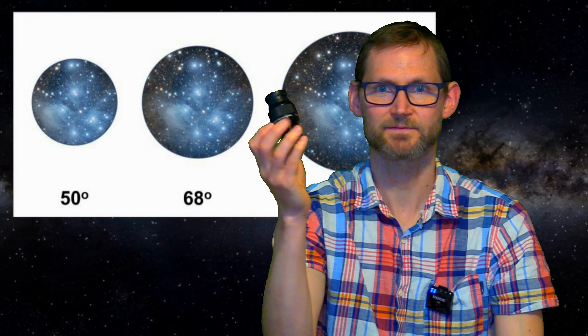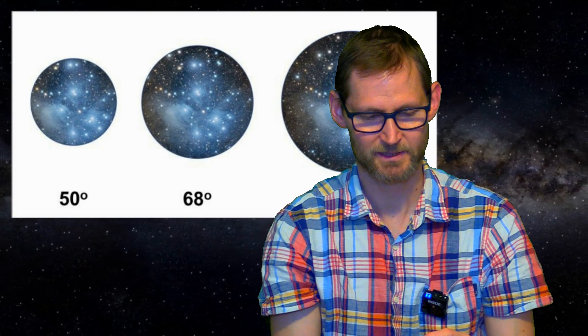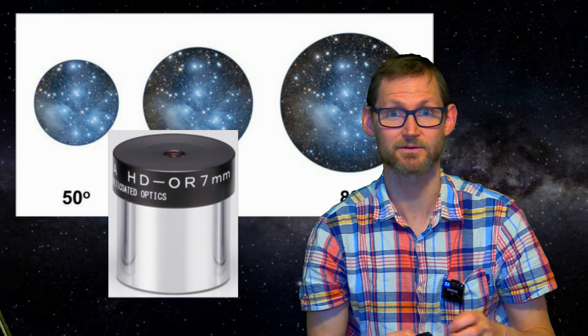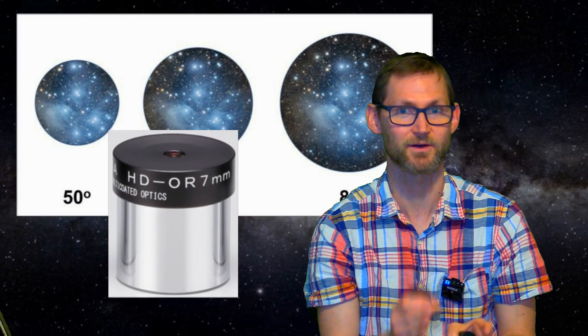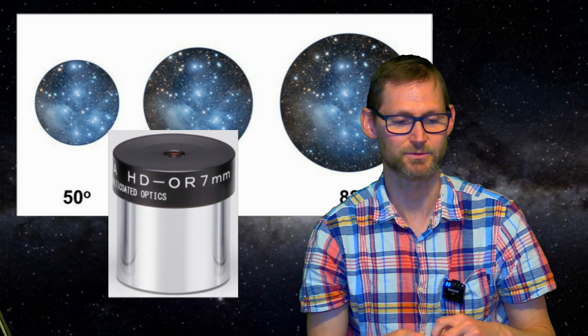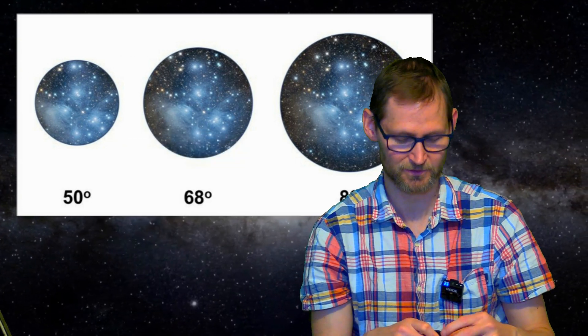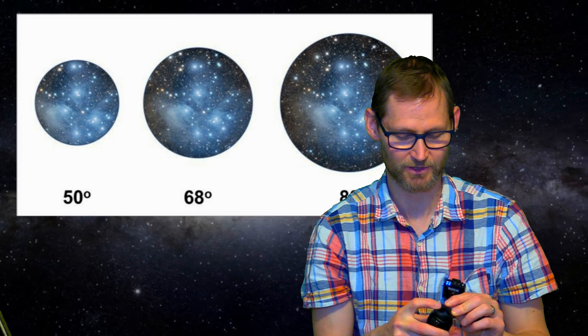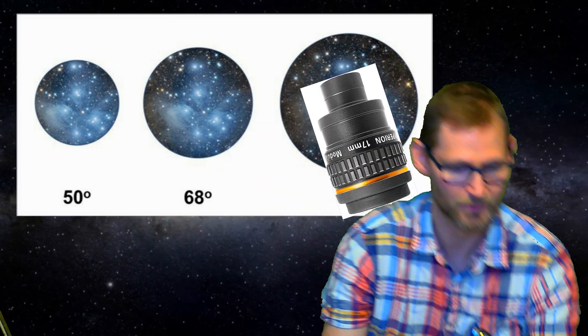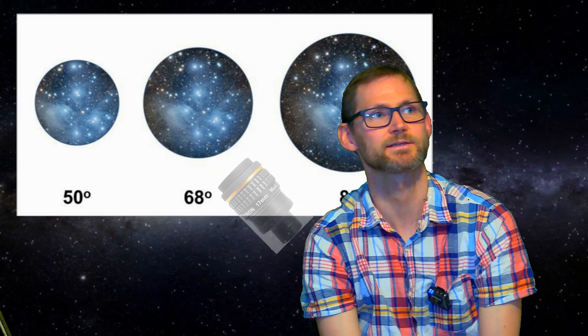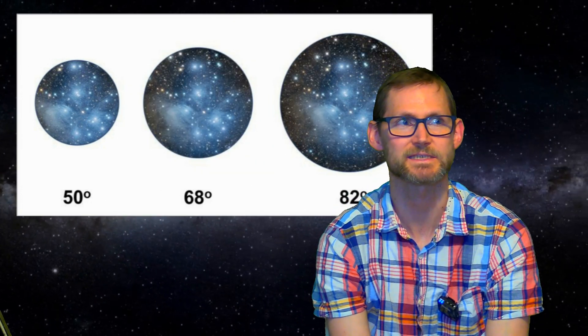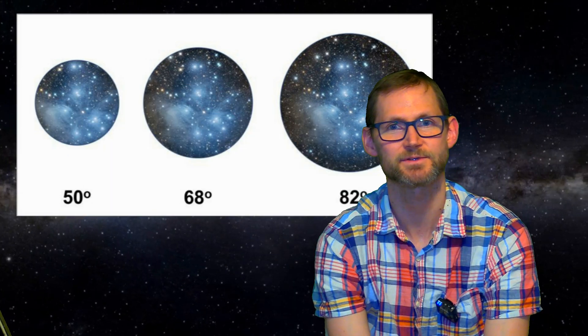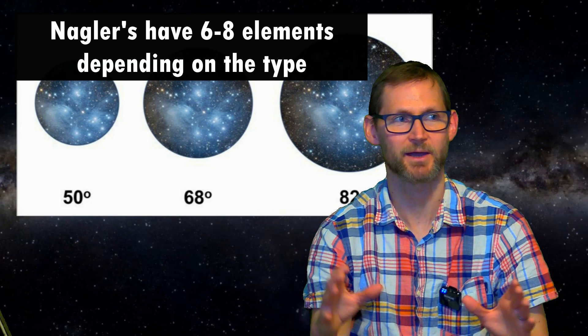This LER eyepiece has 55 degrees. Plössls have 50 degrees. You can get specialist orthoscopic eyepieces that have 40 degrees, and they're like looking through a straw, but they tend to be very high quality, so quite a few lunar and planetary observers like to use those. But you can go the other way. You can get super wide 68 degree eyepieces like Baader Hyperions, and you can get Erfle designs that have 65-70 degrees. Naglers have 82 degrees with like eight elements that enable an even wider apparent field of view.